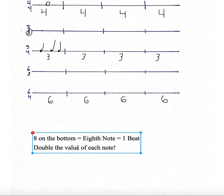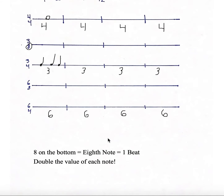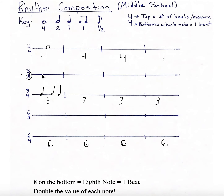Another way you can think about it is when you have 8 on the bottom, you're going to double the value of each note. So when 8 is on the bottom, the eighth note now equals 1 beat, and because of that you're now going to double the value of each note. That means when I'm filling out my 3/8 time, instead of my whole note equaling 4, it's now going to equal 8 because I need to double that value. The 3/8 measure means you have 3 beats in each measure, and the 6/8 line means you're going to have 6 beats in each measure. So in 3/8 and 6/8 times, whenever the 8 is on the bottom, you can't use your whole note because that's going to be too many beats.